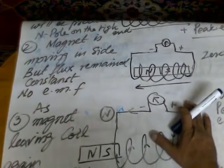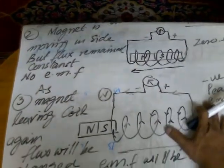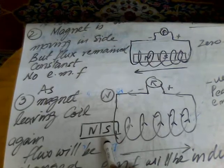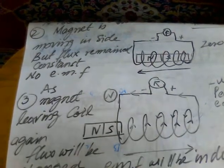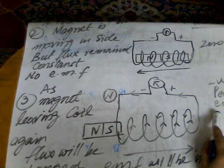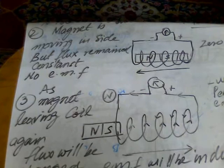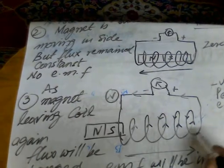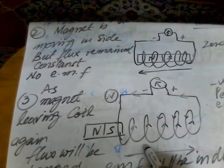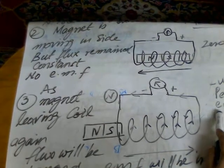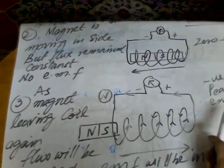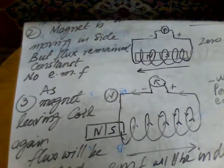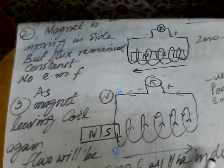In the third figure, the bar magnet is going to leave and is almost leaving the solenoid. Again, there will be a change of flux. But in this case, the negative peak of EMF will be produced. In the first case, while the magnet moved toward the solenoid, that was a positive peak EMF. Now, as the magnet is leaving the solenoid, the flux will change again and EMF will be induced — but this time as a negative peak.